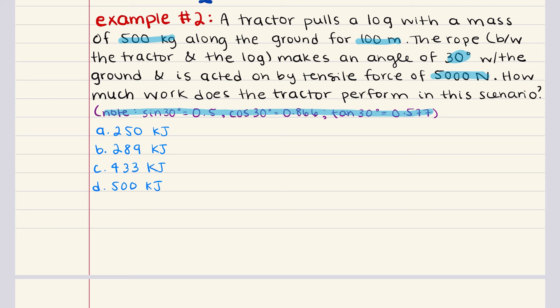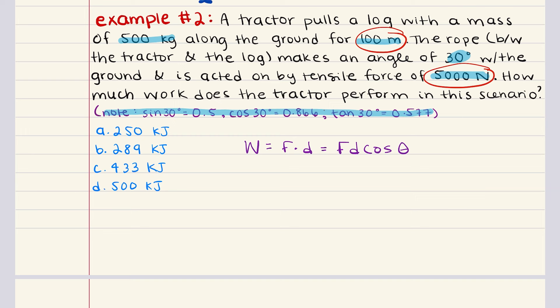Now work is the transfer of energy when a force is applied to an object causing it to move. Mathematically, work is the dot product between force and displacement, written as force times displacement times cosine theta. We're told the force applied by the tractor is the tension in the rope at 5,000 newtons, the displacement is 100 meters, and the angle theta is 30 degrees between the force and the direction of motion. So we have all the information we need to plug into this equation.